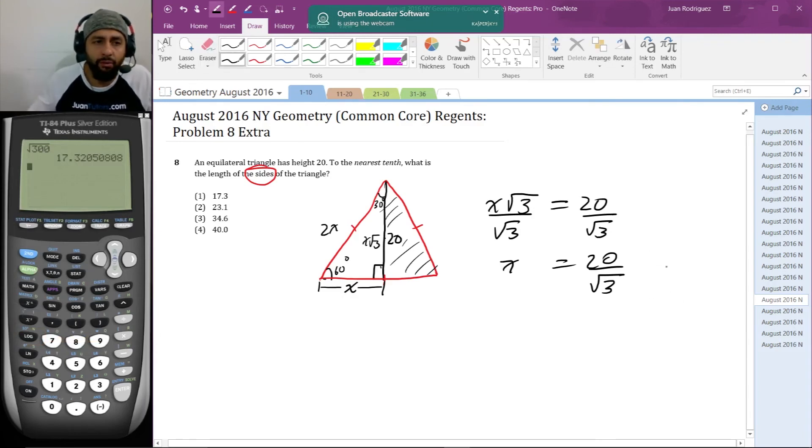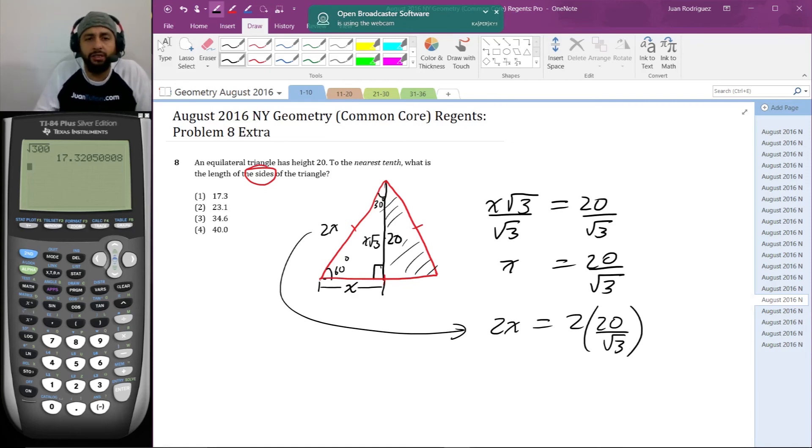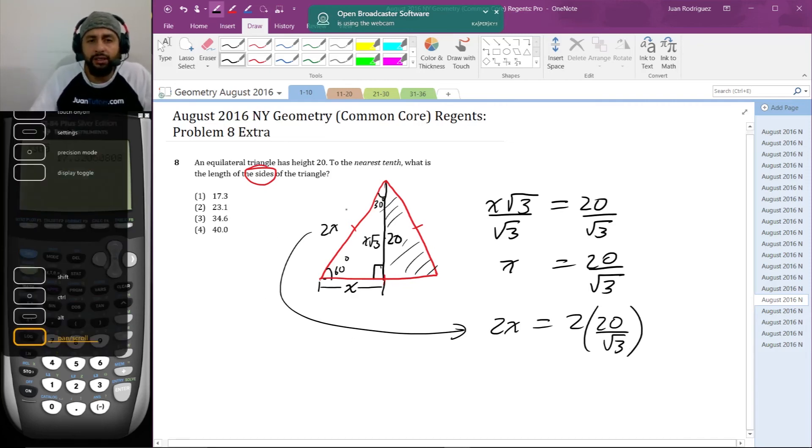I'm going to keep it that way to avoid any extraneous errors. The length of a leg is 2x = 2 × 20/√3. In fact, this decimal answer is enough, so I'm going to plug it into the calculator now.